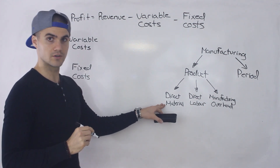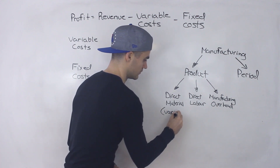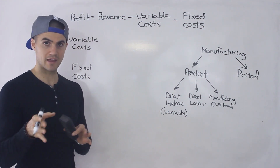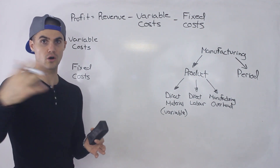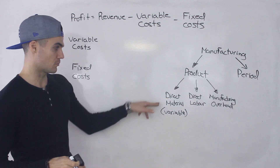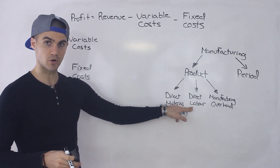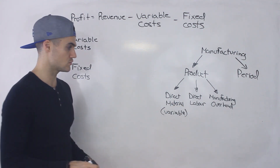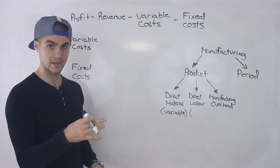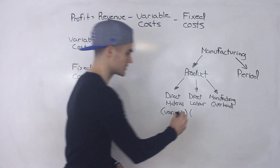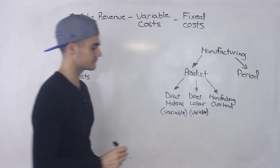Direct material is definitely a variable cost because it depends on the units you're producing. For example, if you're painting a car, the more cars you produce the more direct material you'll use. Similarly, direct labor is also a variable cost — the more units you produce, the more labor you're going to use. It's traceable directly to the product.